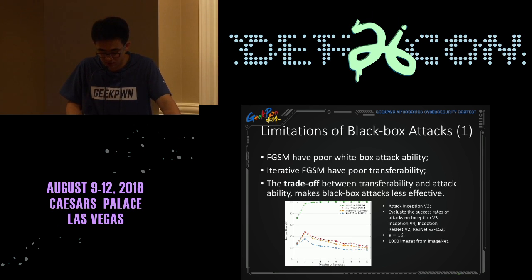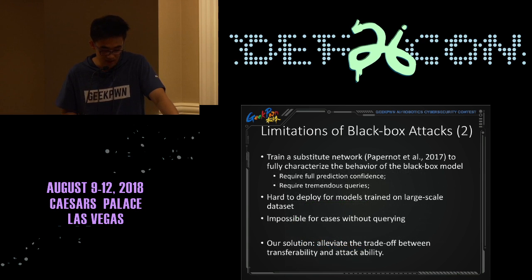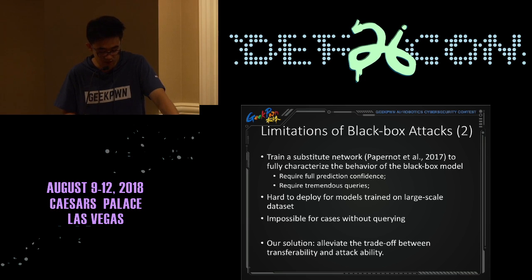Here we have an experiment. We attack Inception V3 with different numbers of iterations and measure the success rate on white-box Inception V3, black-box Inception V4, V2, and ResNet-152. We know that the success rate decreases when increasing the number of iterations for black-box attacks. Another way to attack a black-box model is to build a substitute network to characterize the behaviors of the black-box model, but this method requires full prediction confidence and tremendous recovery effort. It is hard to deploy for models trained on large-scale datasets.